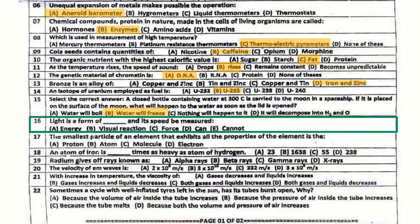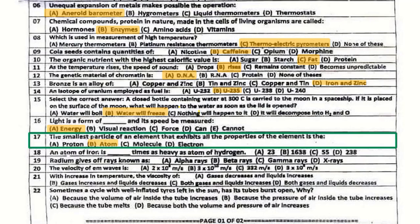Question number 16: Light is a form of energy and its speed can be measured. Question number 17: The smallest particle of an element that exhibits all the properties of the element is an atom.